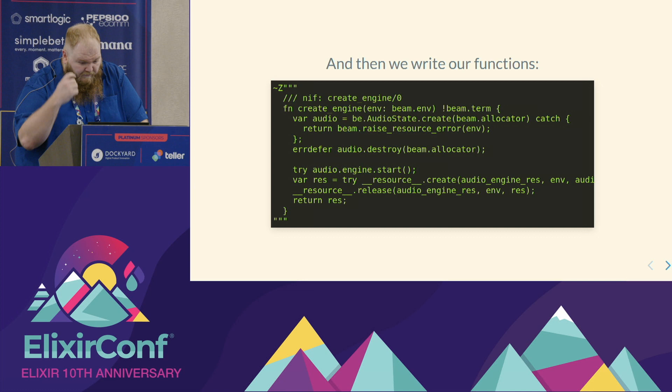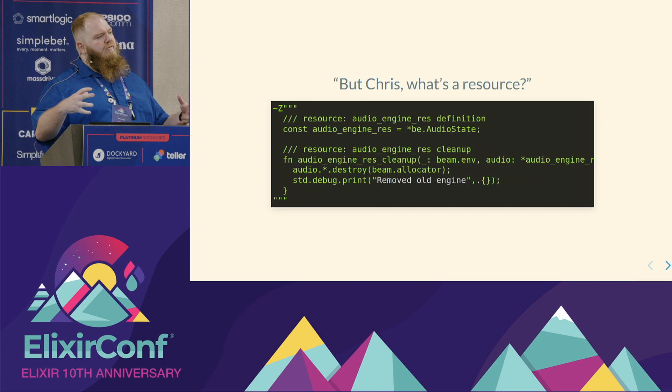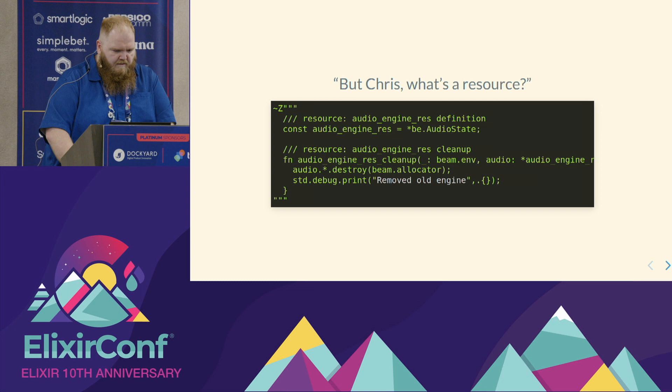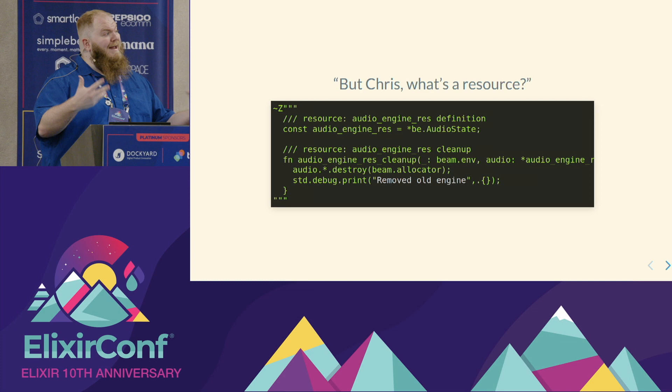What is an AudioEngineRes? In the tail end of the Ziggler 0.9.1 manual, it quickly says you should use resources. A resource is a way for Ziggler to wrap things managed in native/Zig land and give a handle back to your Elixir code. We define AudioEngineRes as a pointer to an audio state, then define a cleanup function — resource.AudioEngineRes.cleanup — which Ziggler internally expands into all the bookkeeping required so that when it goes out of scope, it is properly cleaned up. That way you don't have to manually implement shutdown or destroy.